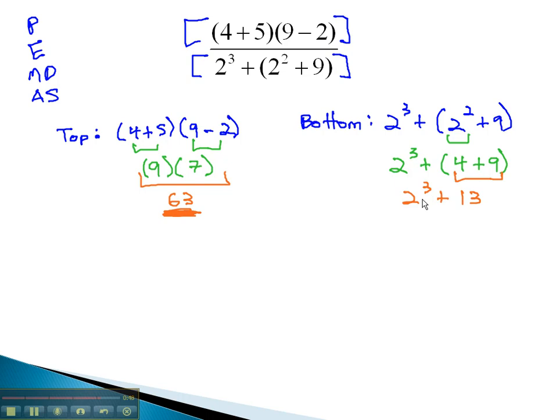Now outside of the parentheses, two cubed is eight, doing exponents before we add the thirteen. And finally, eight plus thirteen is twenty-one. The denominator comes out to twenty-one.